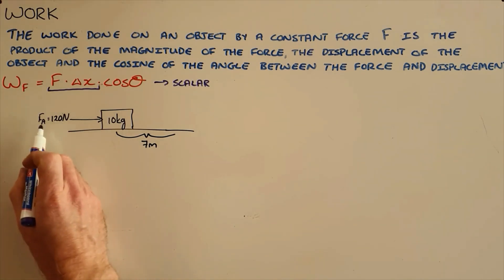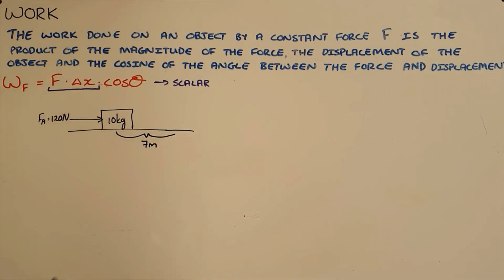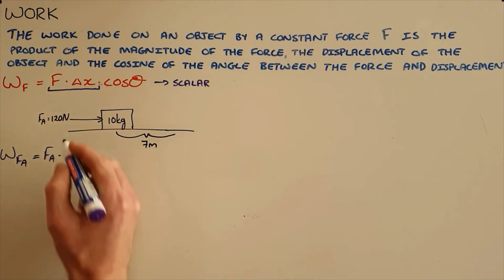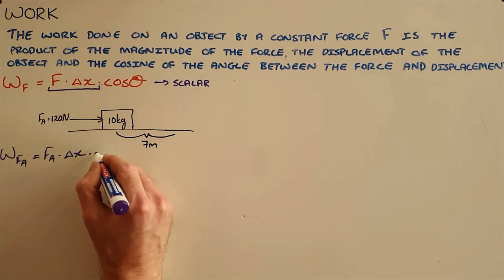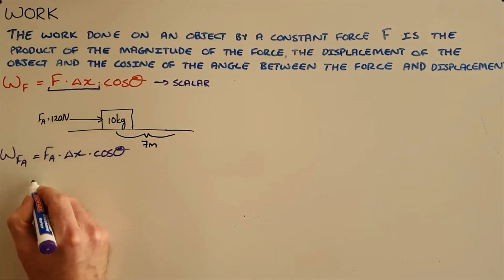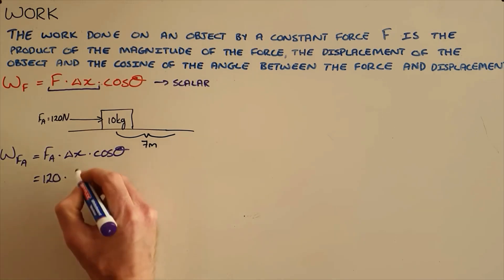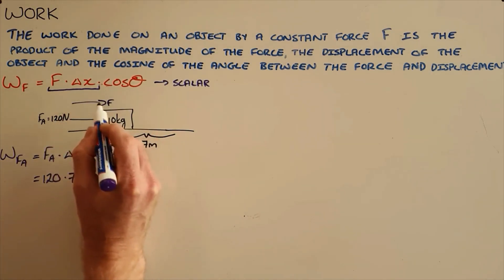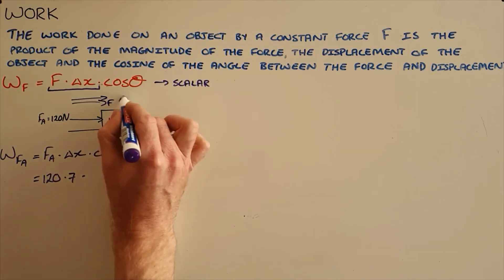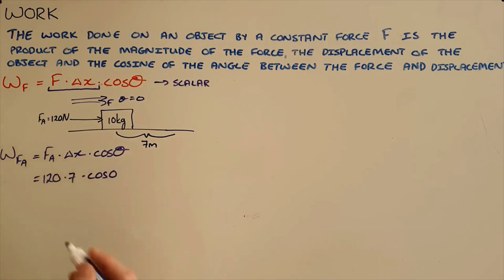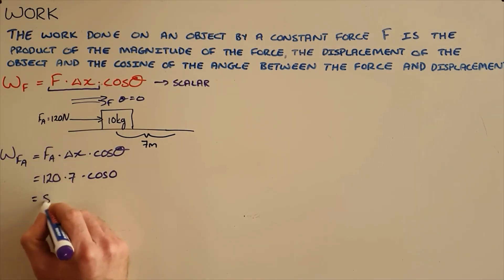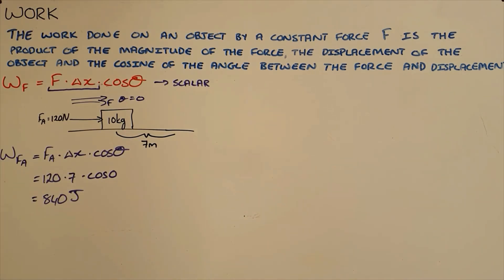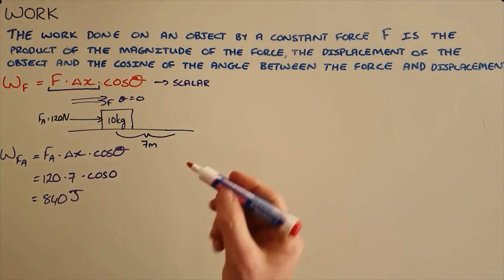We can demonstrate that with an example of an applied force pushing a box seven meters across a horizontal surface. The work done by the applied force equals the applied force times displacement times cosine of the angle between them. The applied force is 120 newtons, the displacement is seven meters, and since both the force and displacement are to the right, the angle between them is zero. Cosine of zero is one, so we get 840 joules of work done by the applied force.